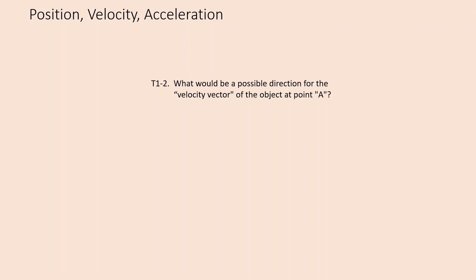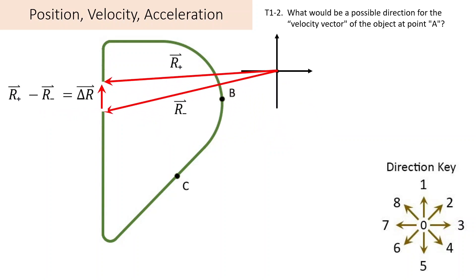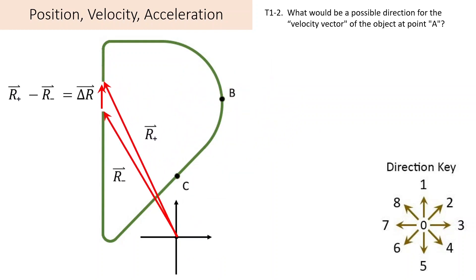Now let's look at the velocity of an object at point A. To do that, let's first look at displacement. Let's use this notation that R-minus is the position vector just before reaching point A, and R-plus just after leaving point A. The final position R-plus minus the initial position R-minus would be the displacement. Notice that as the coordinates are moved around, while the position vectors change greatly, the displacement hasn't changed — it's still a little arrow pointed straight up.